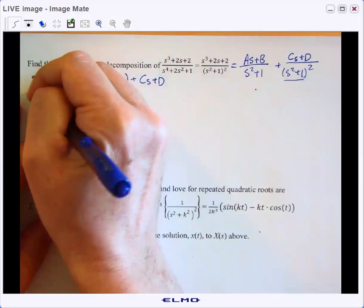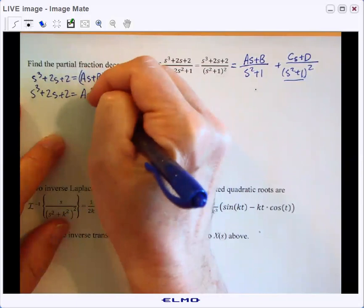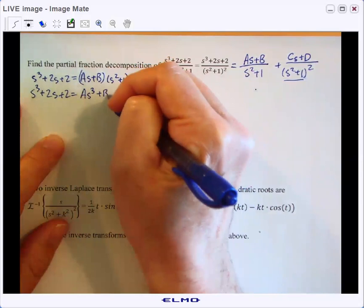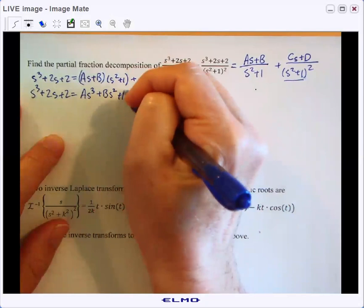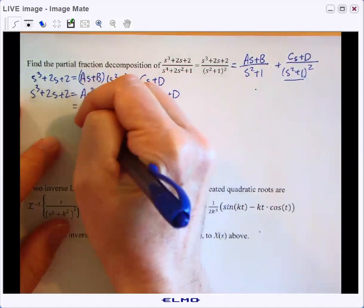And let's see what happens. So we've got S cubed plus 2S plus 2 is equal to, let's distribute this and see what happens. So we've got AS cubed plus, I'm going to do it in a slightly different order. I'll do it in orders of S's.